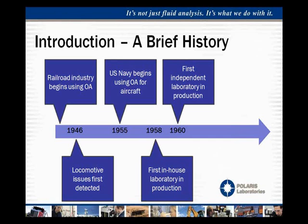After this had been in place for a while, the U.S. Navy got involved and began doing research to adopt this type of wear metal analysis. Then around 1958, the first in-house laboratory was put into production — it was Pacific Intramountain Express, a trucking company that wanted to look at wear metals within their on-road fleet. Around 1960, the first independent laboratory went into production, and they're still open today, essentially bringing oil analysis to the masses so different industries could start utilizing it.